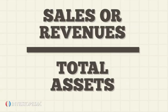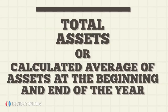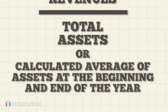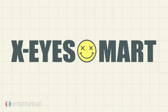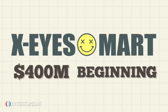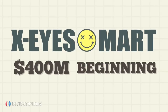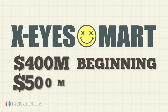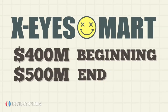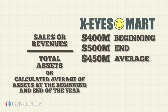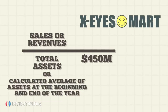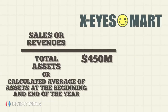The total assets may also be calculated as the average of assets at the beginning and end of the year. For example, Excise Mart has an asset base of 400 million dollars at the beginning of its fiscal year. The company sees its asset base increase to 500 million dollars by its fiscal year end, which means it had an average of 450 million dollars in assets for the fiscal year. During that same fiscal year, the company generated 250 million dollars in revenues.